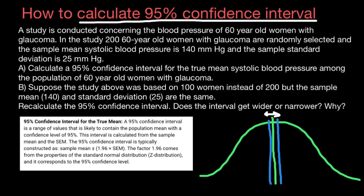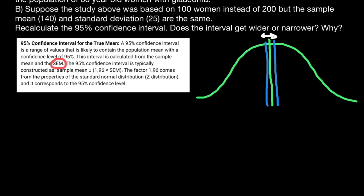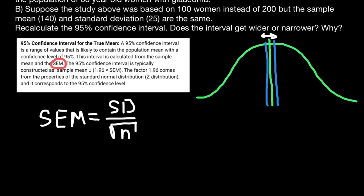Before we are able to do that, we have to find the standard error of the mean. We put in the numerator the standard deviation divided by the square root of n, where n is the number of values in our sample.